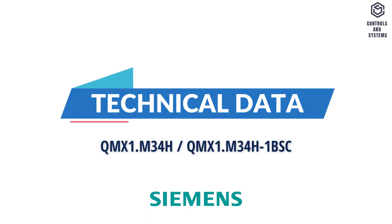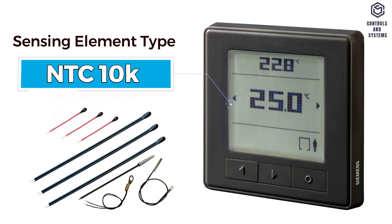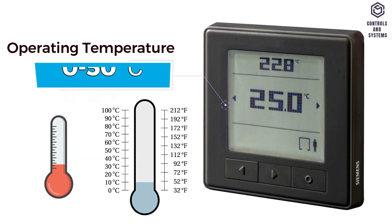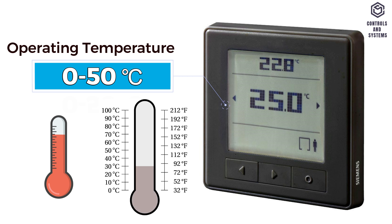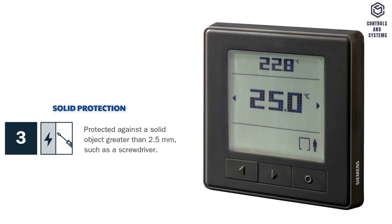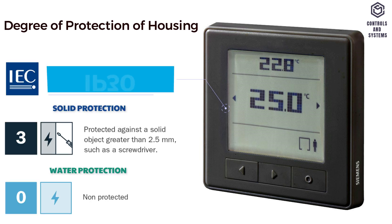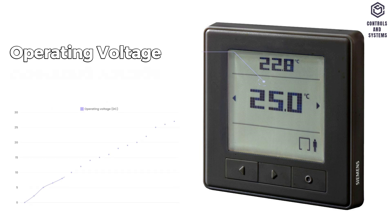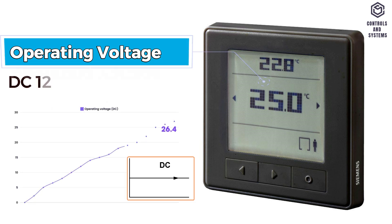Technical data: sensing element type is NTC 10K, operating temperature is 0 to 50 degrees Celsius, degree of protection of housing to IEC EN is IP 30, operating voltage is DC 12 to 26.4 volt, 5 milliamps.